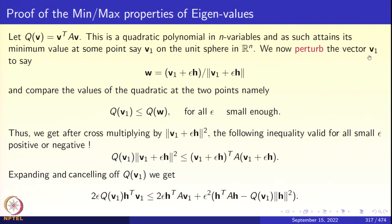We perturb the unit vector V1 by forming V1 + ε·h where h is any vector. This may not be a unit vector, so we divide by its length to get W = (V1 + εh)/‖V1 + εh‖, which is again a unit vector. Since V1 is the absolute minimum on the unit sphere, Q(V1) ≤ Q(W) for all sufficiently small ε (positive or negative). Multiplying through by ‖V1 + εh‖² to clear denominators, we get the inequality Q(V1)·‖V1 + εh‖² ≤ (V1 + εh)^T A(V1 + εh).